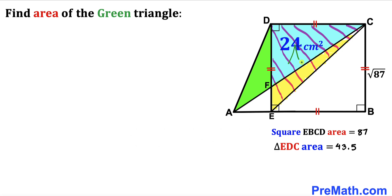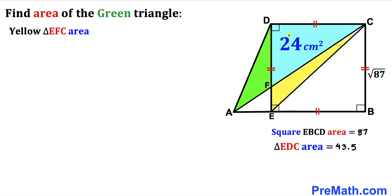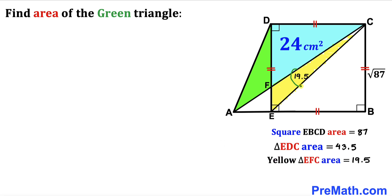The area of right triangle EDC turns out to be 43.5 centimeters square. Now we calculate the area of yellow triangle EFC. The area of yellow triangle EFC equals the area of triangle EDC minus the area of blue triangle FDC. That is 43.5 minus 24, which gives us 19.5 centimeters square. So the area of yellow triangle EFC turns out to be 19.5 centimeters square.